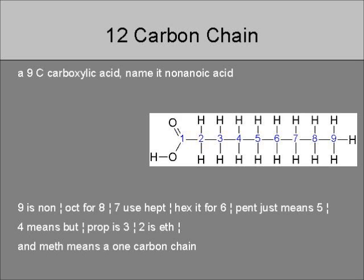For a nine carbon carboxylic acid, we name it nonanoic acid. Nine is non, oct is for eight. Seven uses hept, hex is for six. Pent just means five. Four means but, prop is three, two is eth, and meth means a one carbon chain.